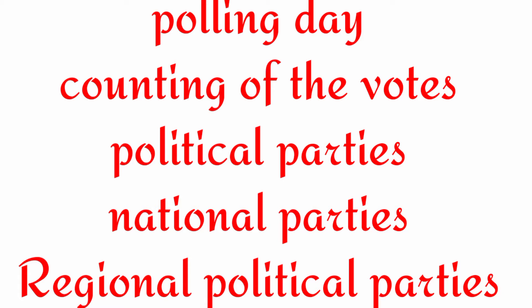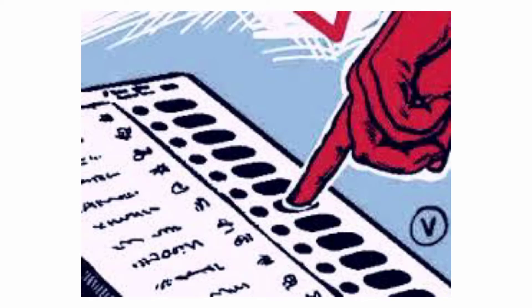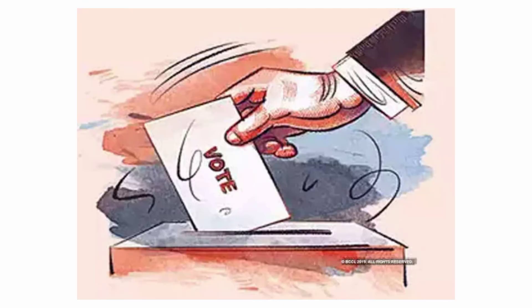In today's class let us see some remaining procedures — polling day, counting of votes, political parties, national parties, and regional parties. Polling day is the day of voting or the day of election. It is the day when the election would be held. On the polling day, the voters go to the assigned polling booth to vote. The polling booth is a place of voting.